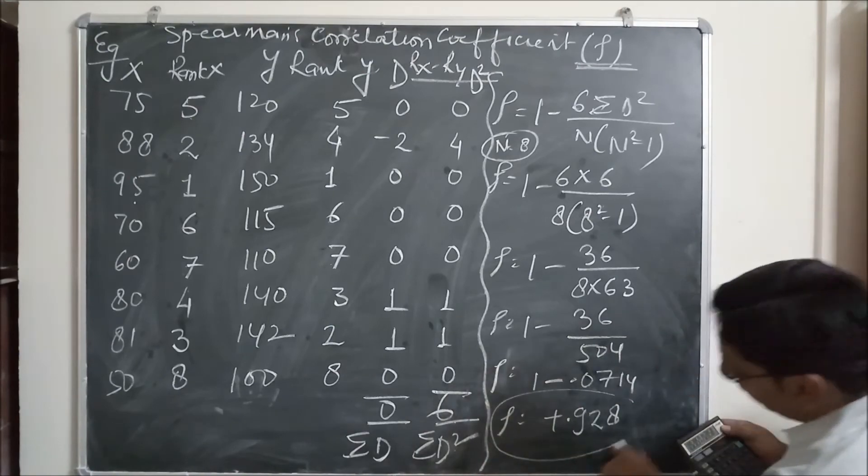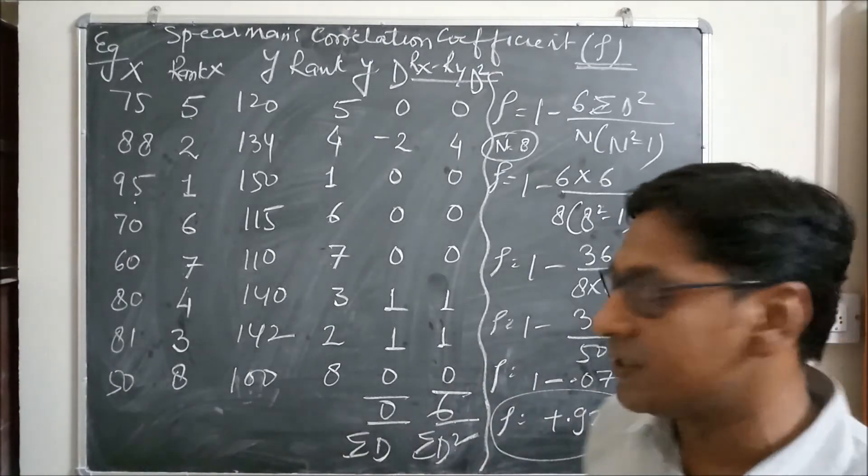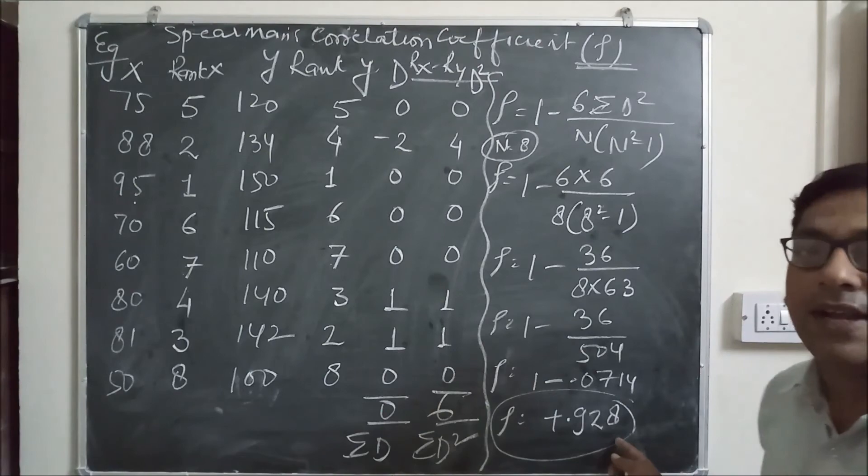So rho equals to plus 0.928. The coefficient of Spearman ranking difference is 0.928.